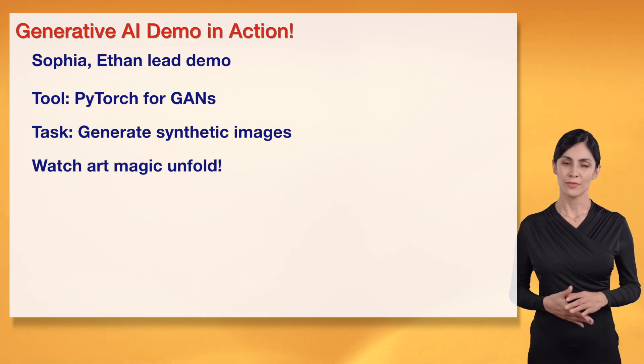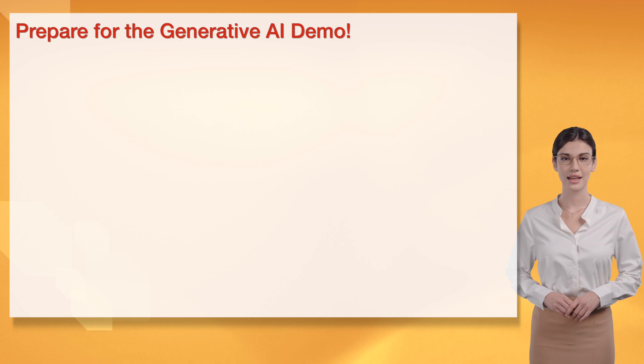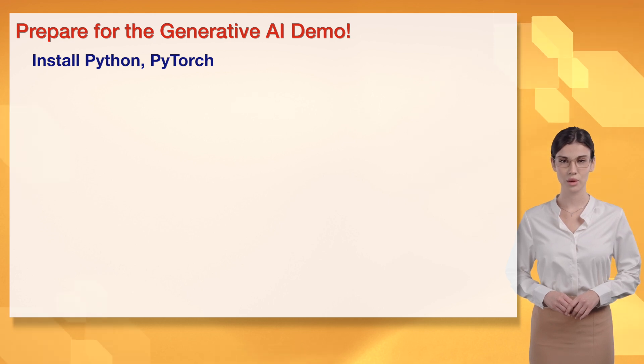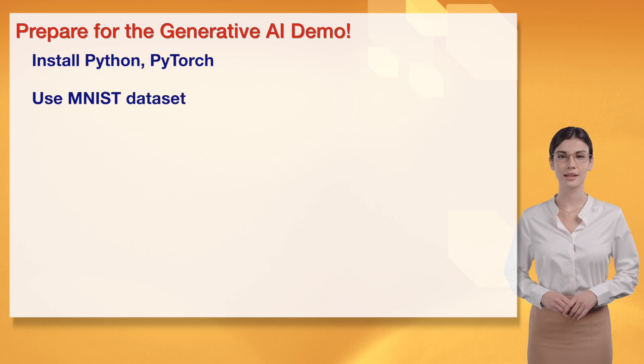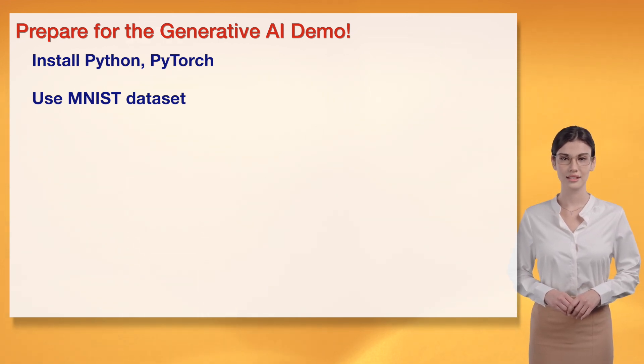Hi wizards, it's Sophia. Let's prep for our generative AI demo. Install Python and PyTorch with pip install torch. Use the MNIST dataset, available in PyTorch, for image generation. I'm so excited to create images. This is going to be epic. Let's start the art magic.